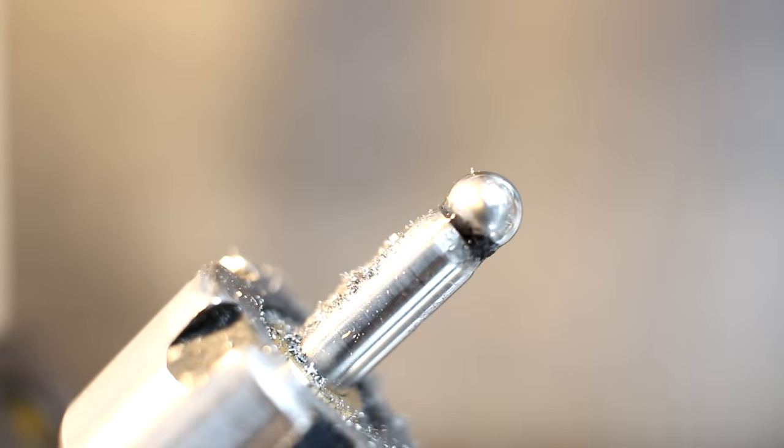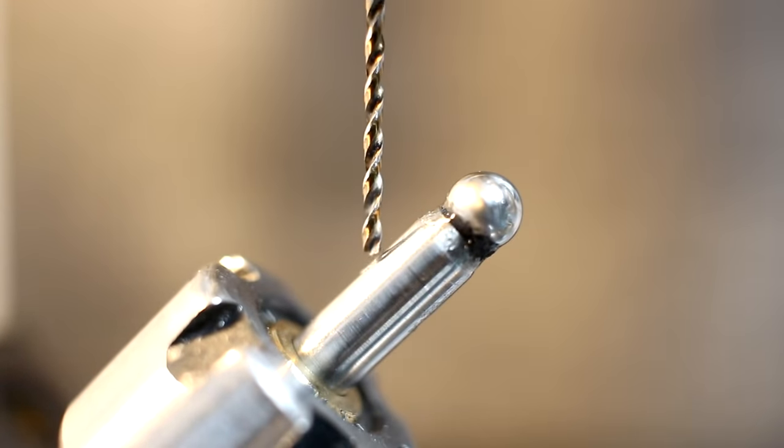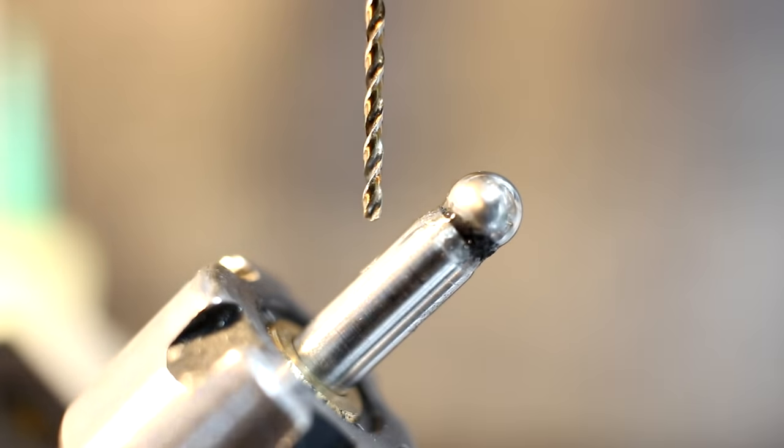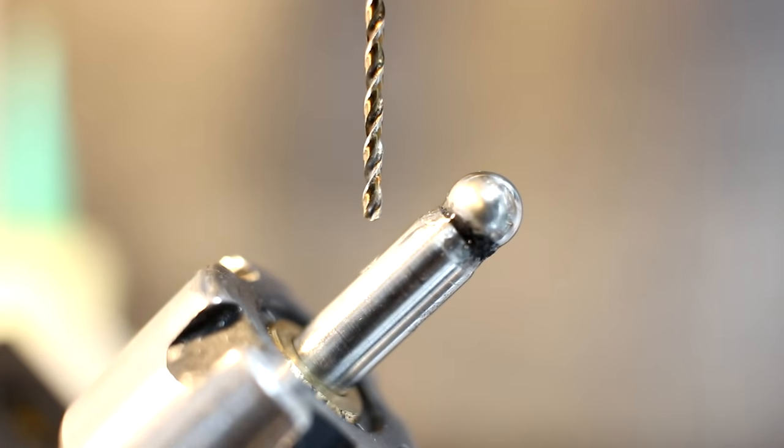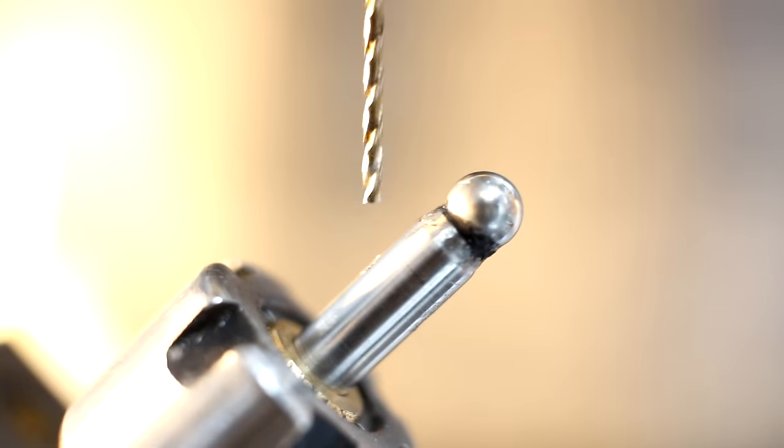There we go. Now we change to a drill chuck and the one millimeter drill. Okay, here we are. One millimeter drill bit running at 3000 RPM and using a little bit of cutting oil. That's not 3000 RPM.